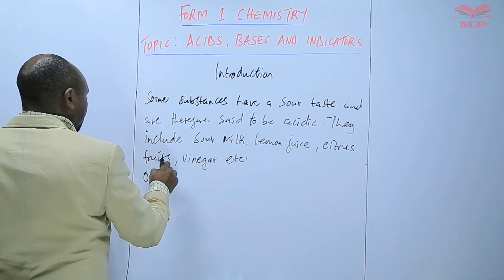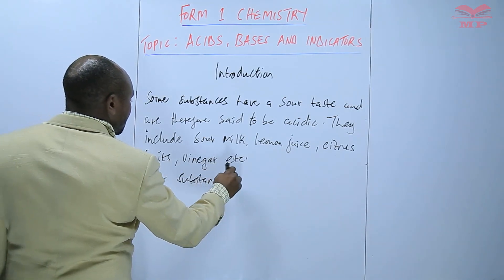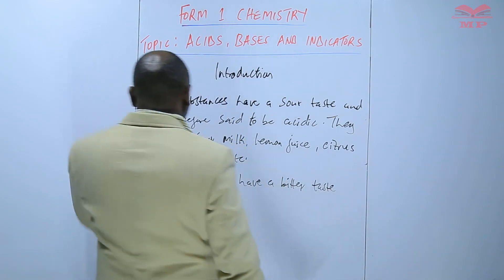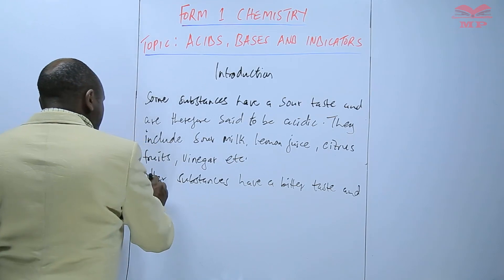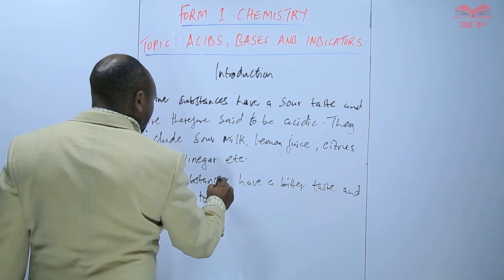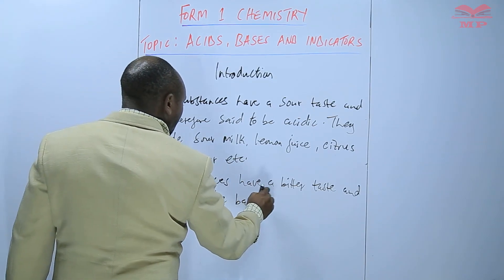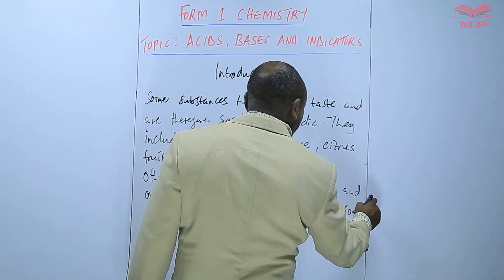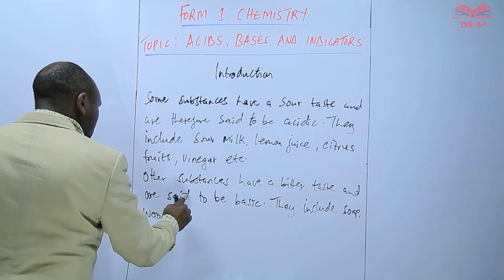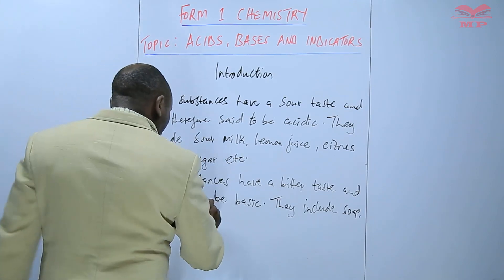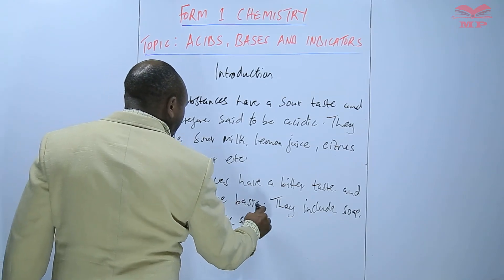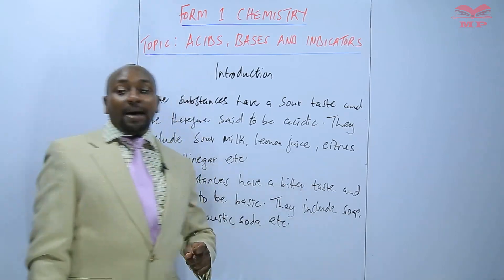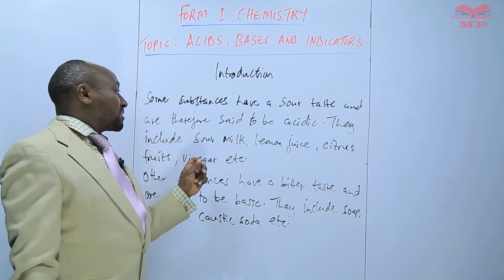We also have other substances that have a bitter taste, and these are said to be basic. Examples include soap, wood ash, and caustic soda. So substances with a sour taste are said to be acidic, while those with a bitter taste are said to be basic.